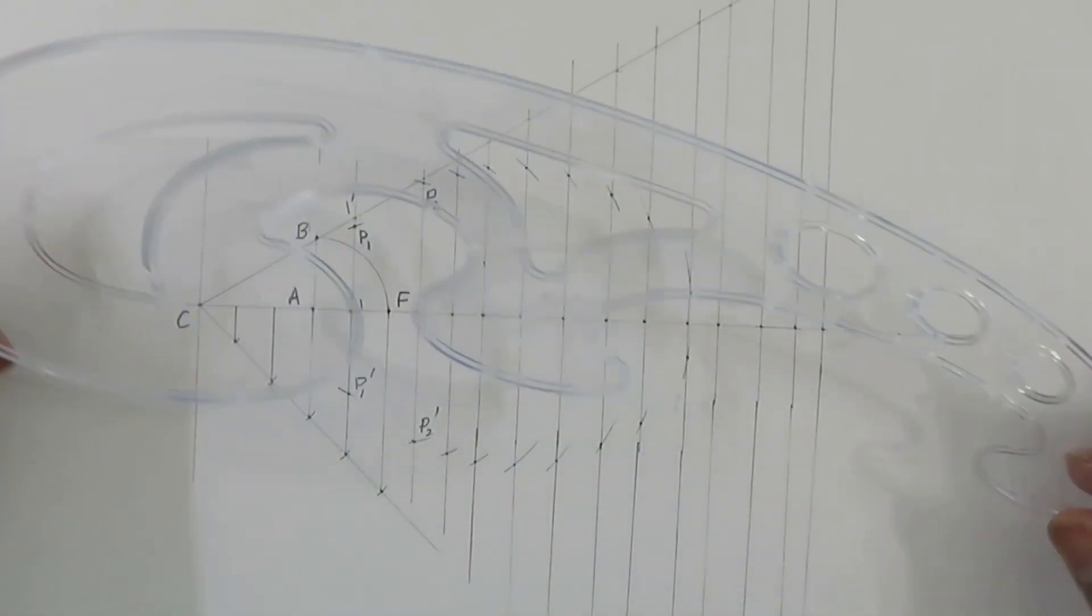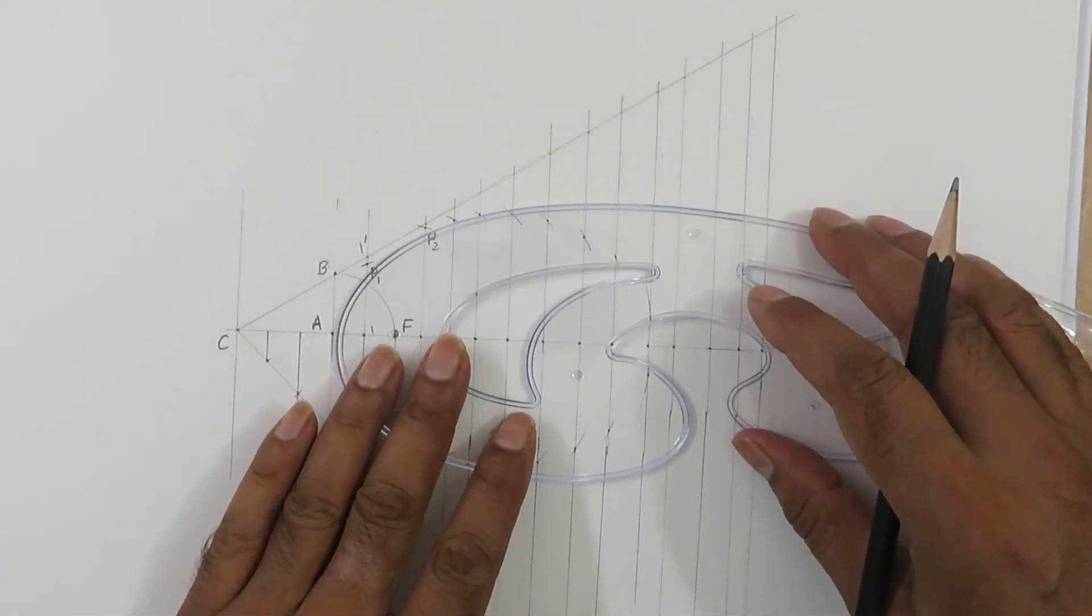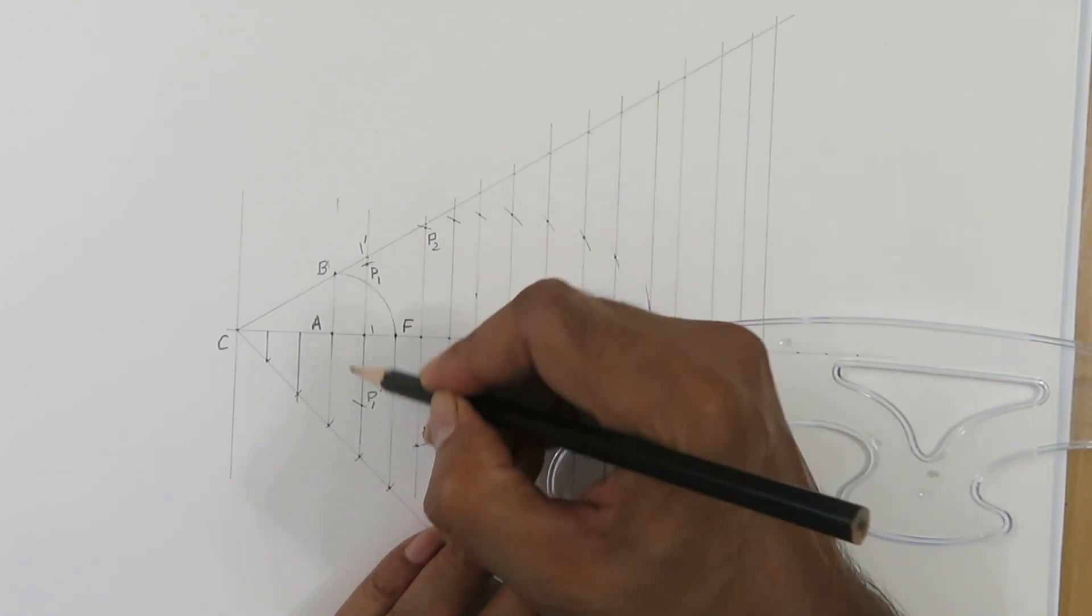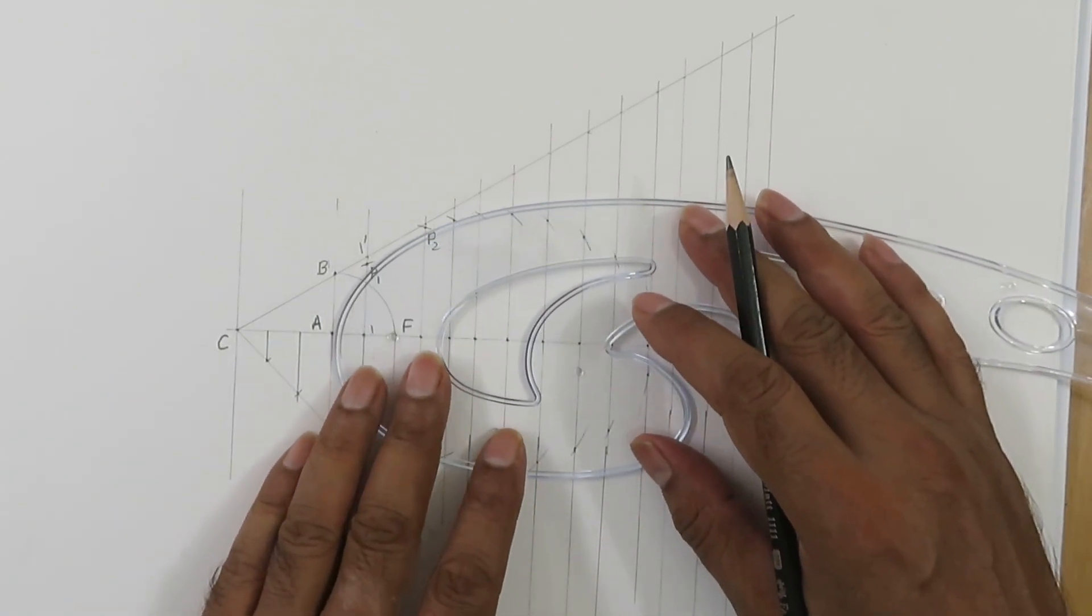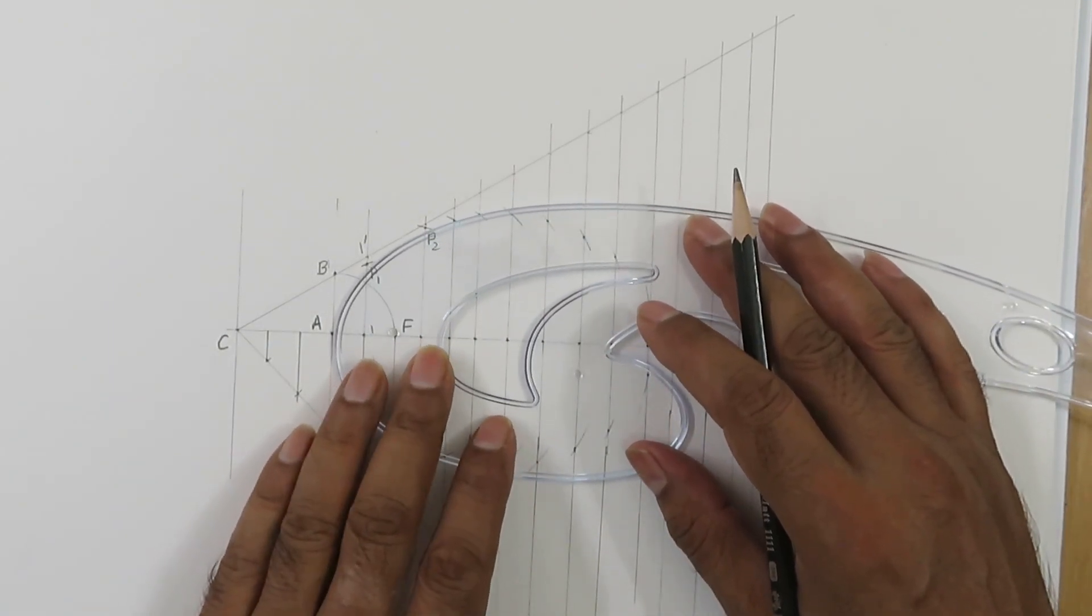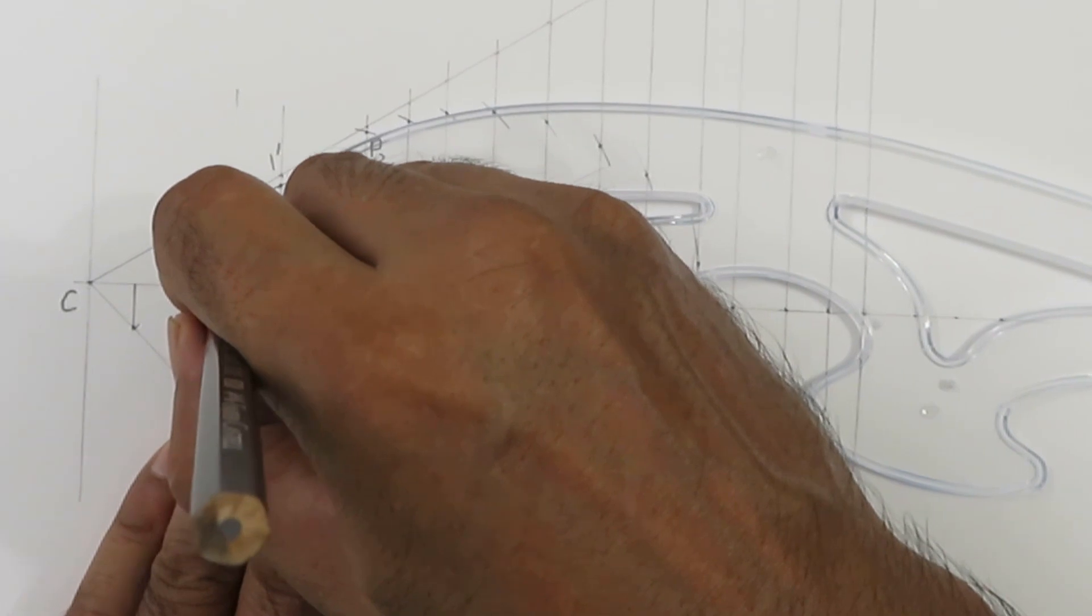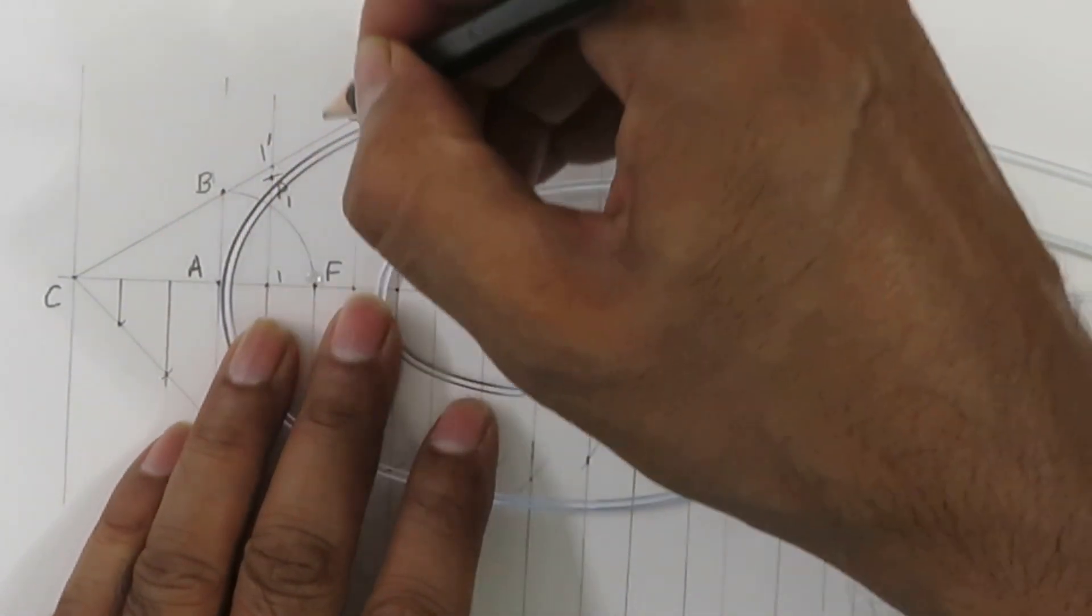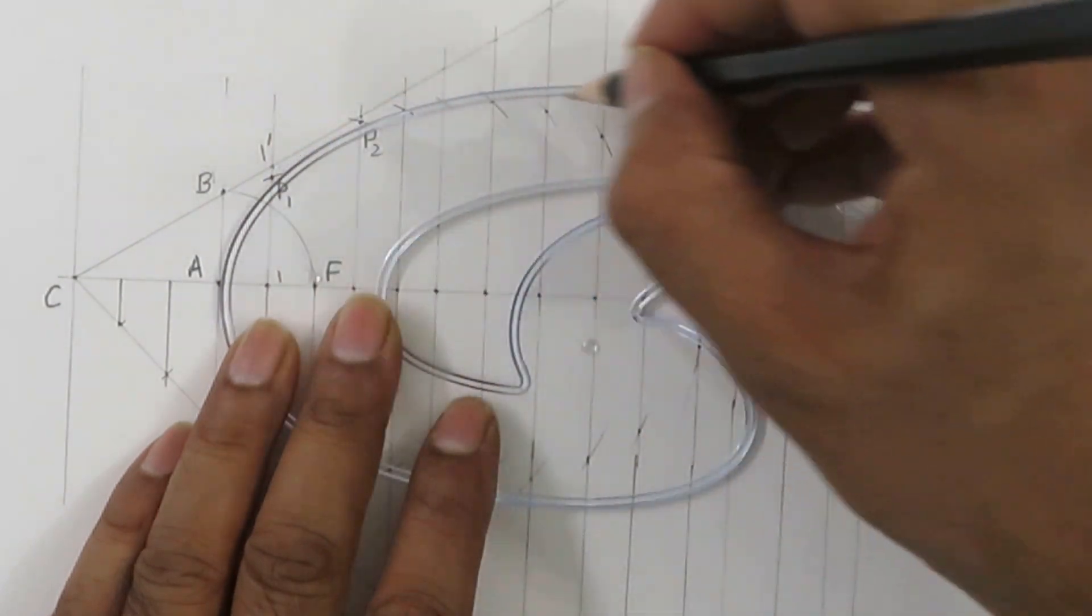French curve is something like this. We can try to see how we can best draw an ellipse. Now this is the end of this major axis on this side and these are the two points at equal distance from the major axis. We have to try to fit as much as possible. For example, if I am fixing point A, then P1 also should match and in some way P2 also, because this curve has to go smoothly.